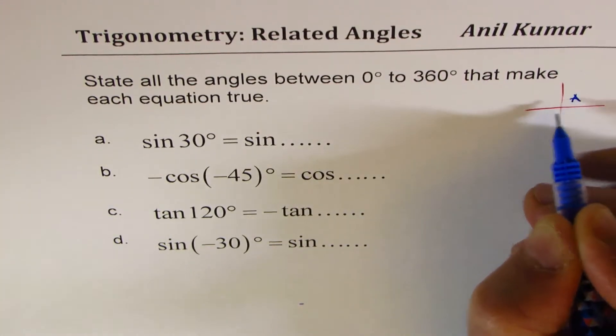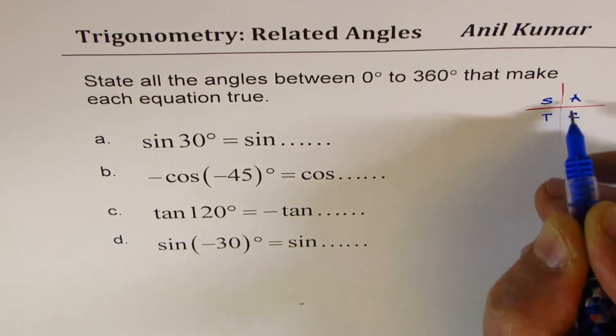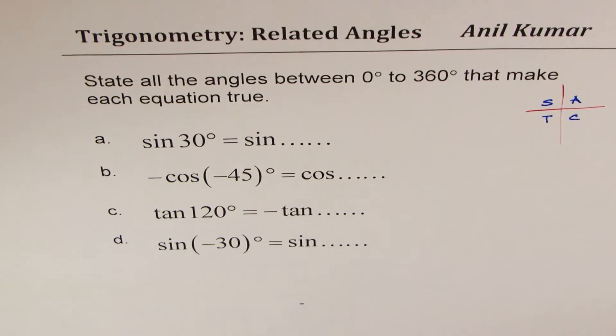All are positive in quadrant 1, sine in 2, tan in 3, and cosine in 4. So that's important to remember.